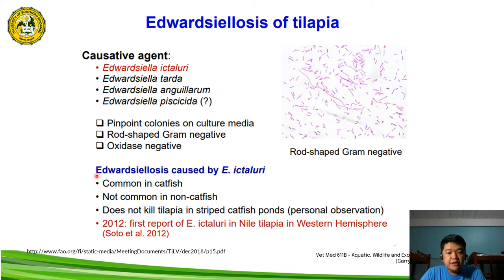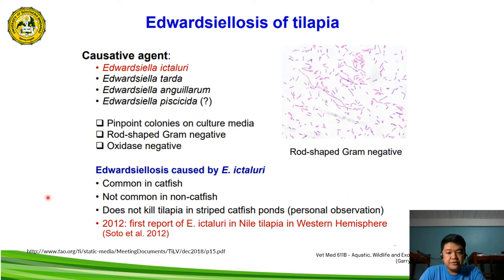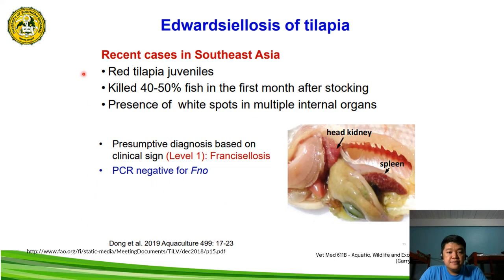Aside from tilapia, edwardsiellosis — particularly Edwardsiella ictaluri — is also common in catfish. It is not really common in non-catfish and does not kill tilapia in striped catfish ponds, according to the personal observation of the author. In 2012, the first report of Edwardsiella ictaluri was recorded in Nile tilapia in the Western Hemisphere. There are also recent cases of edwardsiellosis in Southeast Asia, reported in red tilapia juveniles, killing about 40–50% of fish in the first month after stocking, with white spots in multiple organs as the manifestations.